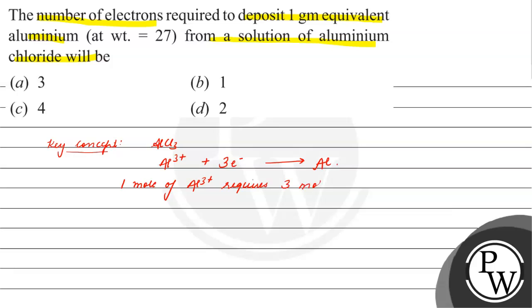...three moles of electrons. That means if one gram equivalent of aluminium...